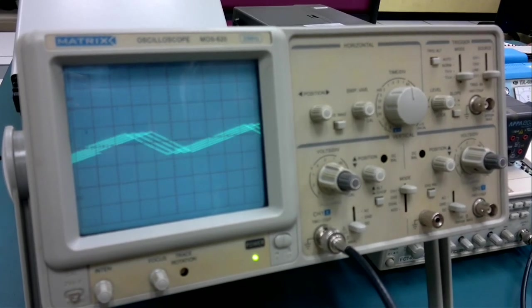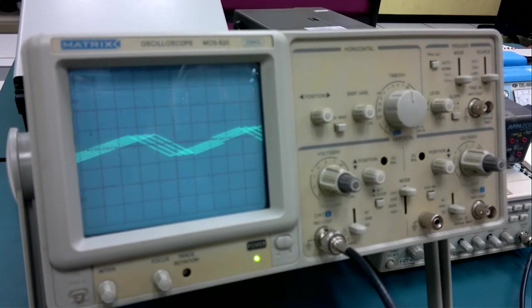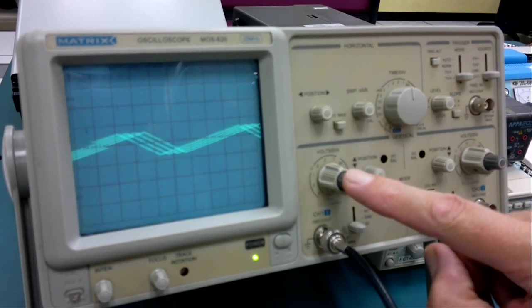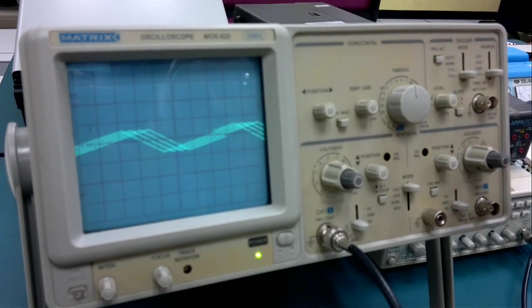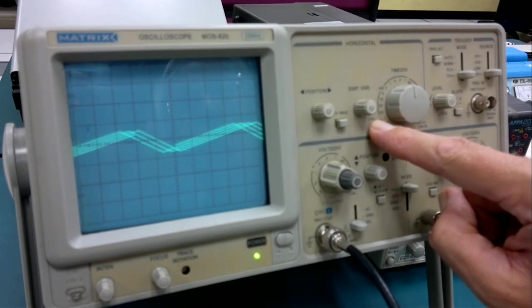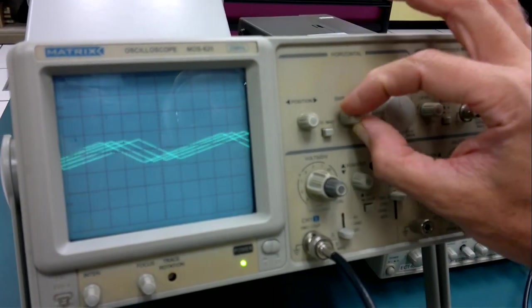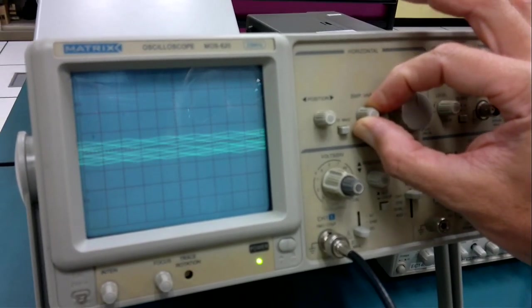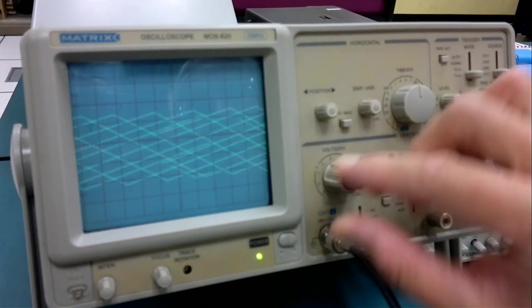Focus is good when you get a steady trace. Now, other very important thing. We've got some variable controls. These are small ones, which are in the middle of the big controls. They have a CAL position, shortly calibrated. Must be right-hand click to CAL.